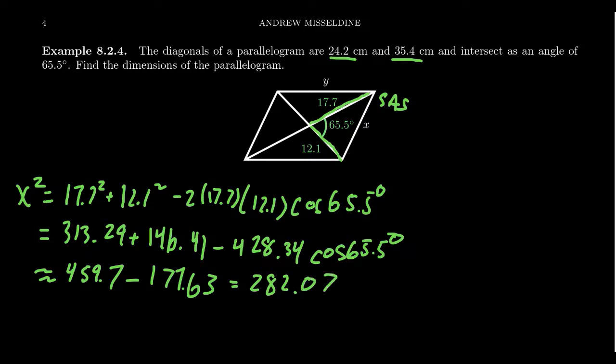Again, somewhat of a number crunch here. That gives us X squared. To get X, we need to take the square root. So X is going to be approximately the square root of 282.07, which is going to give us 16.8 centimeters.